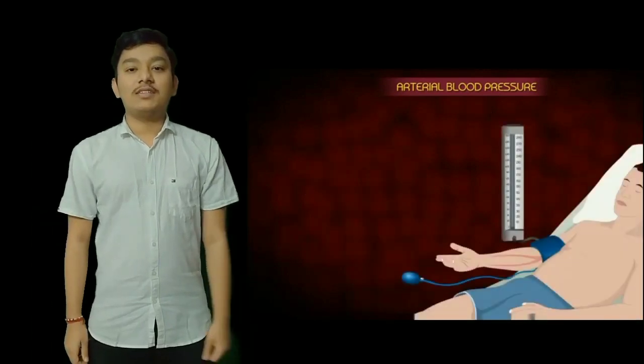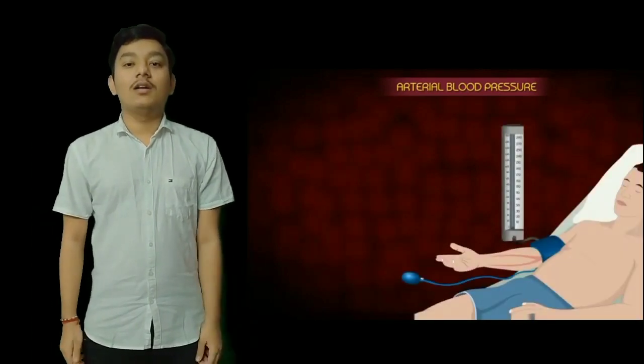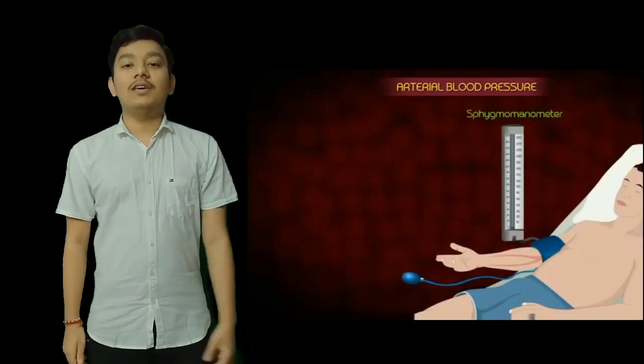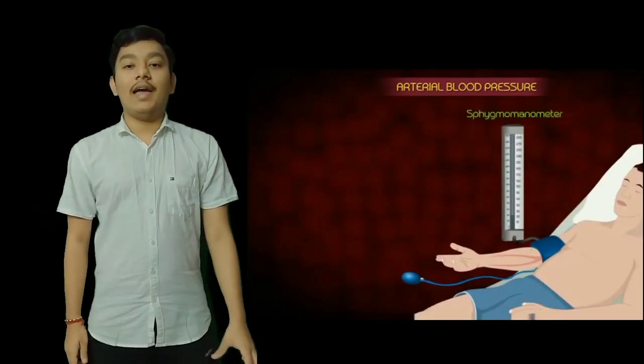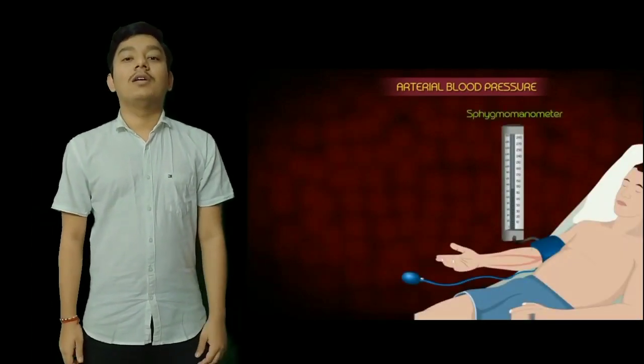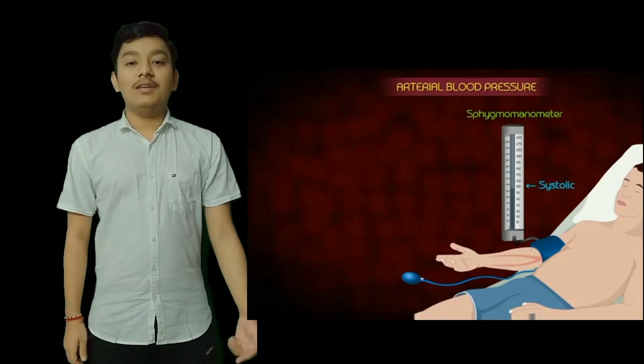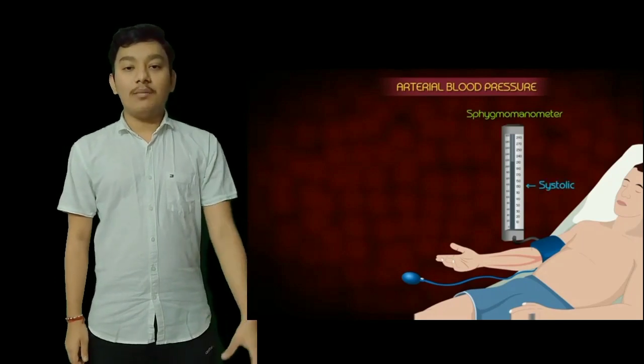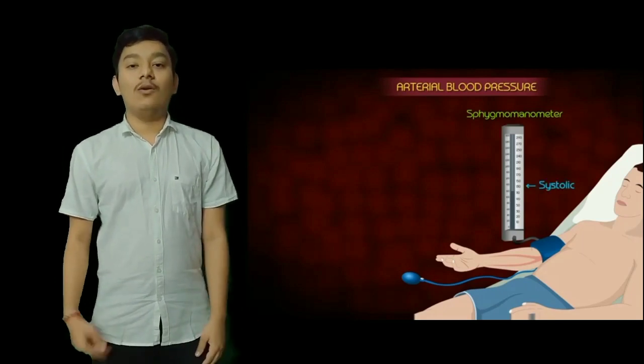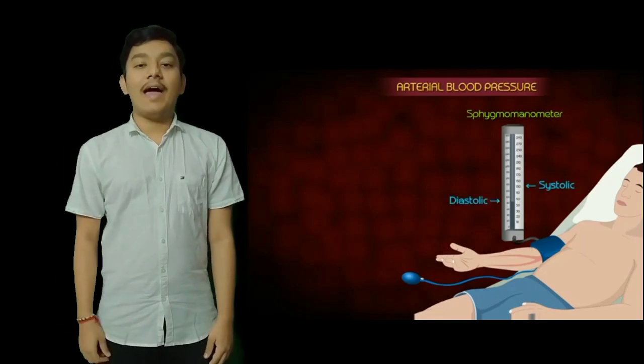When a person takes their blood pressure the machine gives a high and low number. The high number is the systolic blood pressure and the lower number is the diastolic blood pressure.